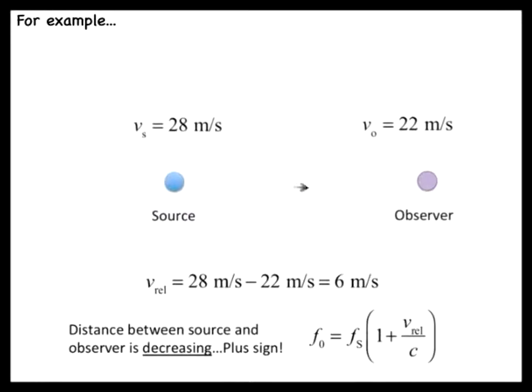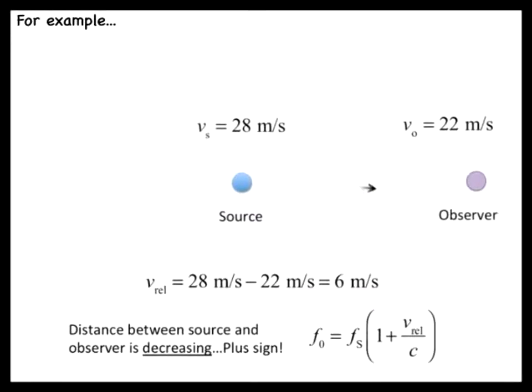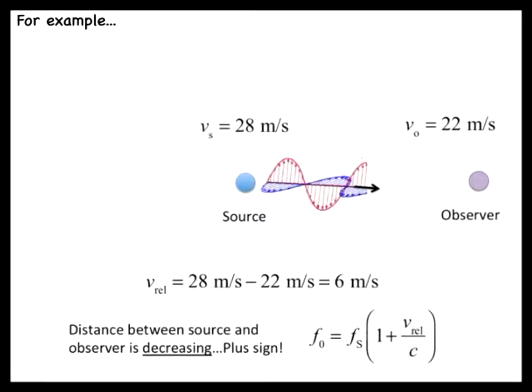In the Doppler expression for the observed frequency, v_rel is the relative speed between the source and the observer. This is given by the magnitude of the difference in the two speeds, which in this case would be 6 meters per second. Since the faster-moving source is behind the observer, the distance between the two is decreasing, so we would need to use the plus sign in this case.